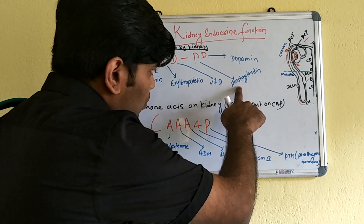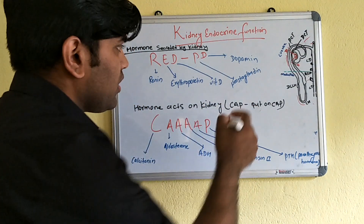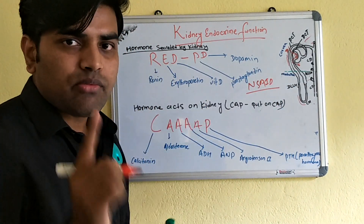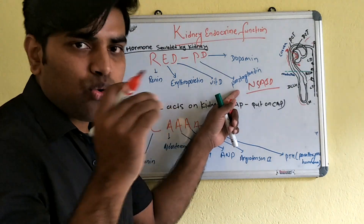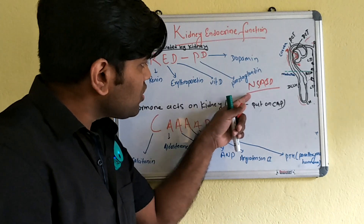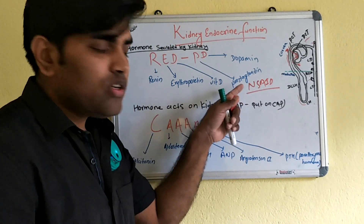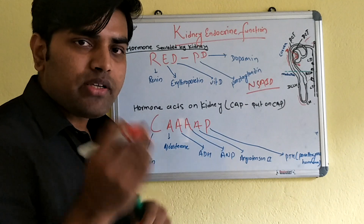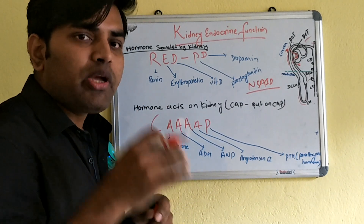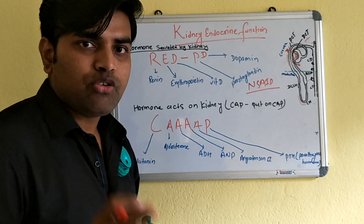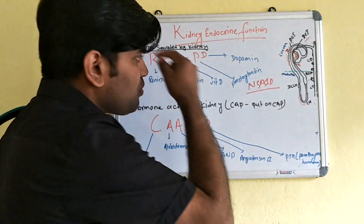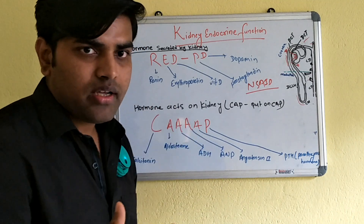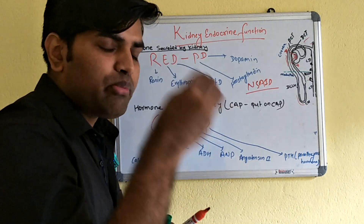When you use NSAIDs (non-steroidal anti-inflammatory drugs), they inhibit prostaglandin synthesis. If a patient already has low blood flow to the kidney and you administer NSAIDs, prostaglandin is inhibited, there is no vasodilation of the afferent arteriole, and this situation — using NSAIDs in a patient with low blood pressure or shock — may lead to acute renal failure.